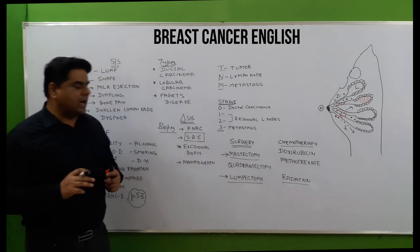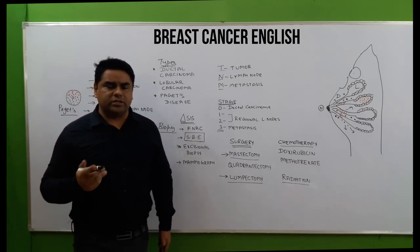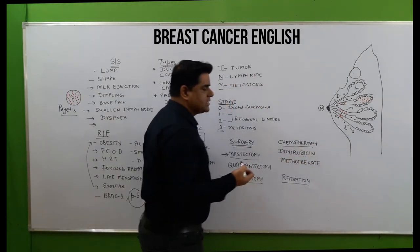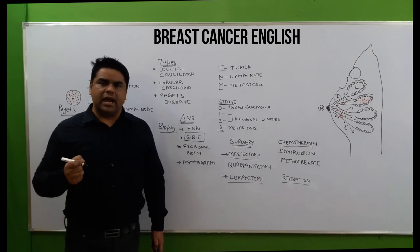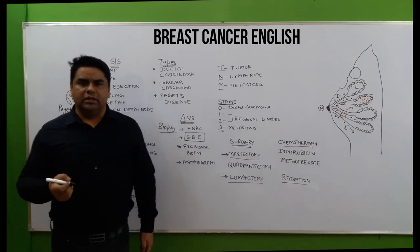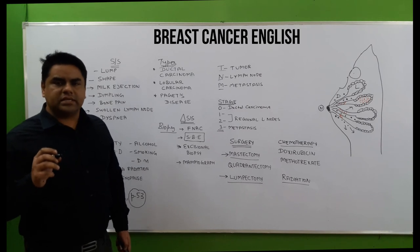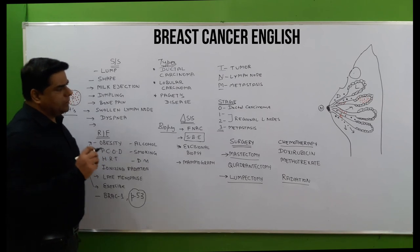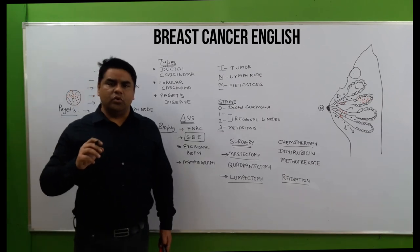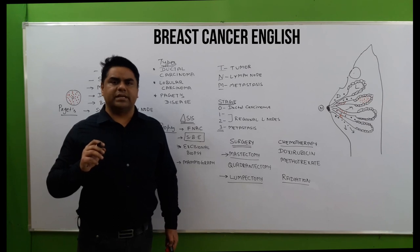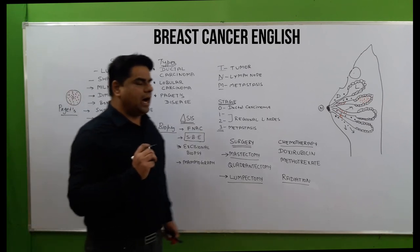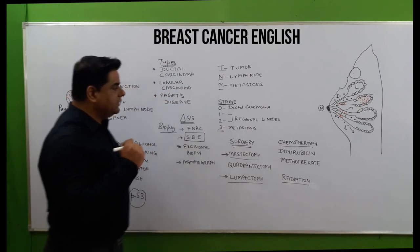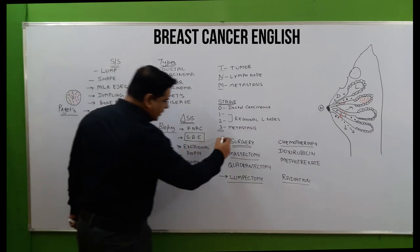Quadrectomy means removing one-fourth (a quadrant) of the breast that is showing metastasis and tumor formation. Modified mastectomy involves removal of the breast tissue, nipple, and lymph nodes, but the pectoral muscles and Cooper's ligament are stitched together to keep the area intact.